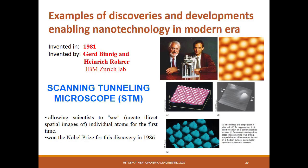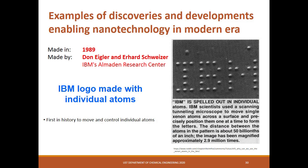It wasn't until 1981 with the development of the scanning tunneling microscope, or STM, that we could see individual atoms, which marked the beginning of modern nanotechnology. STM was invented by Gerard Binnig and Heinrich Rohrer, who both received the Nobel Prize in Physics in 1986. Using STM in 1989, researchers from IBM were the first in history to move and control individual atoms. They moved xenon atoms across a surface one at a time and precisely positioned them to spell out IBM.